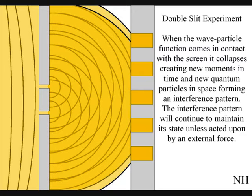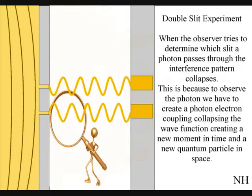Just as in Newtonian physics, only when an external force comes in contact with the light does the interference pattern collapse. When an observer tries to see which slit the photon went through by turning on an electronic detector, forming a new photon-electron coupling, the interference pattern collapses.